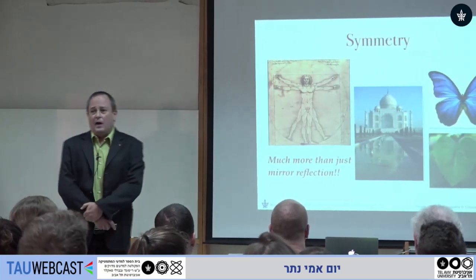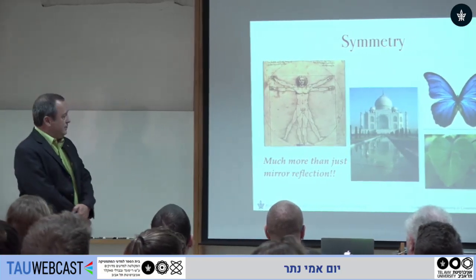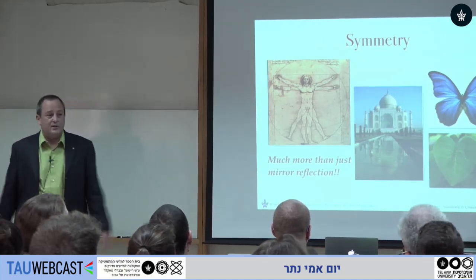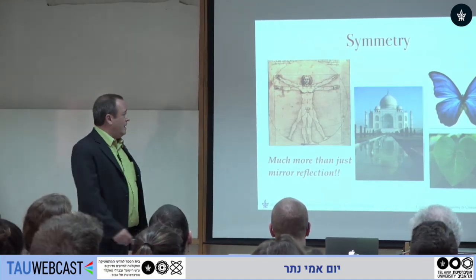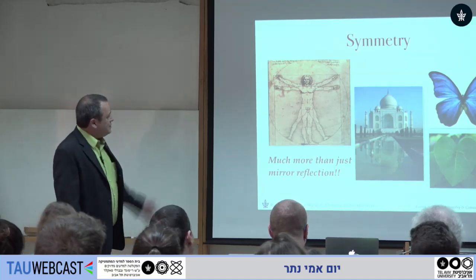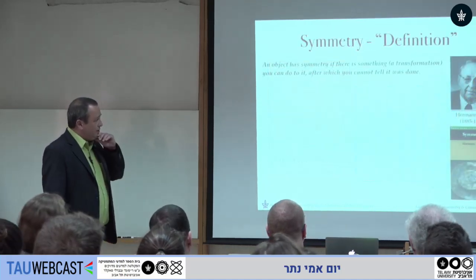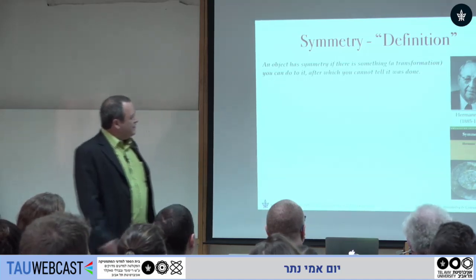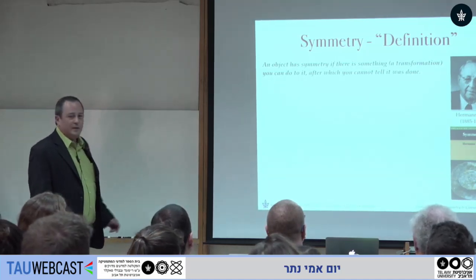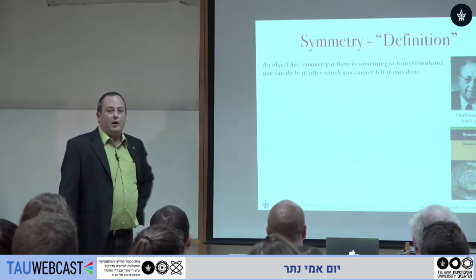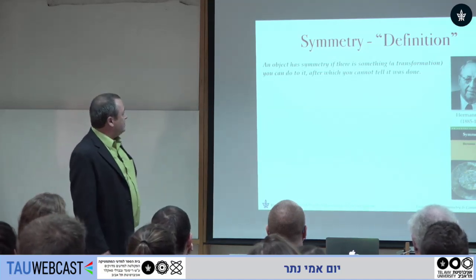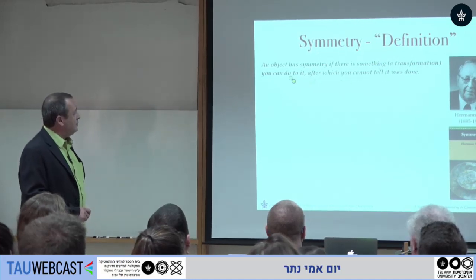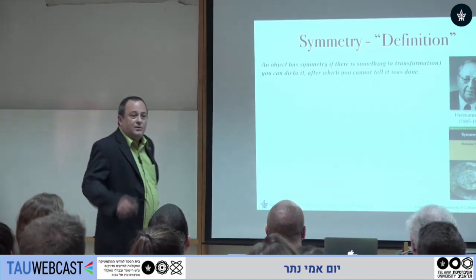Symmetry is known to everyone. It starts from looking at mirror reflections of objects, which seem very aesthetic and beautiful, but in science symmetry is much more than that. A definition I associate with Herman Weyl says that an object has symmetry if there's something that you can do to it after which you cannot tell that it was done.